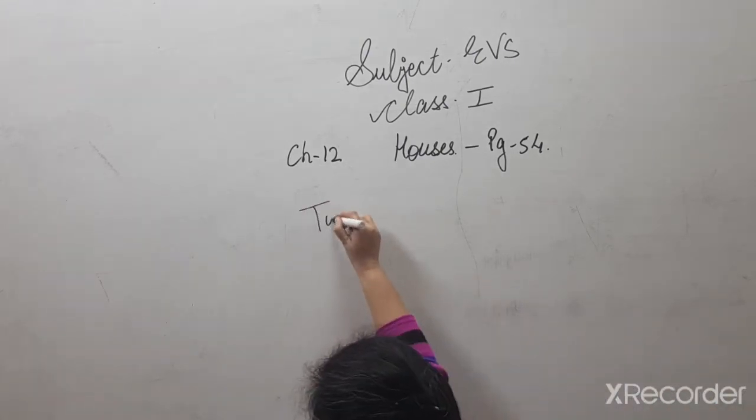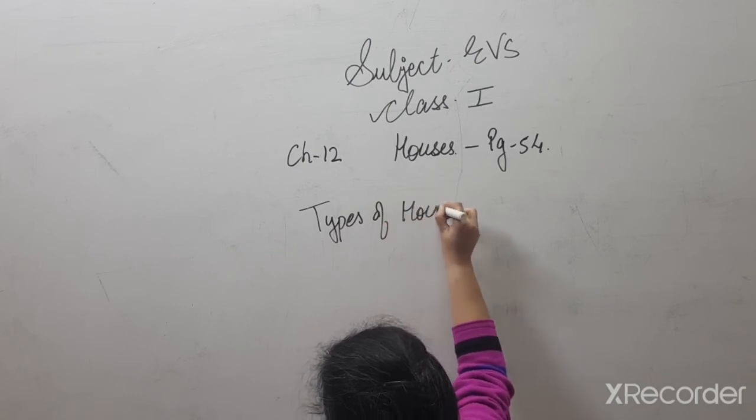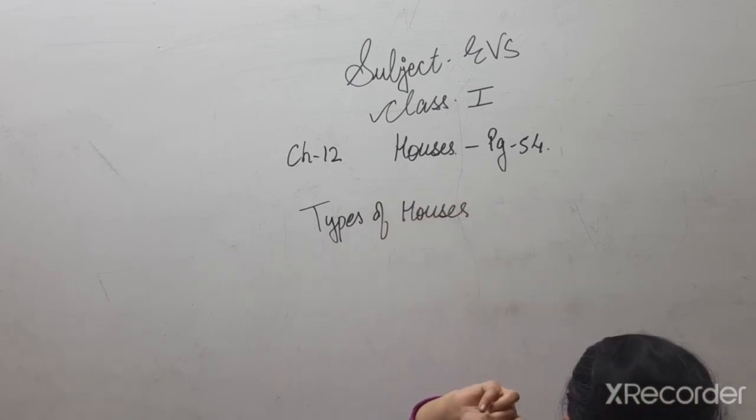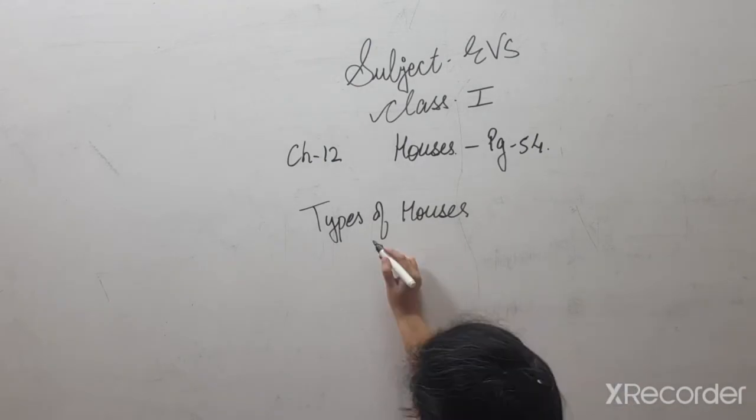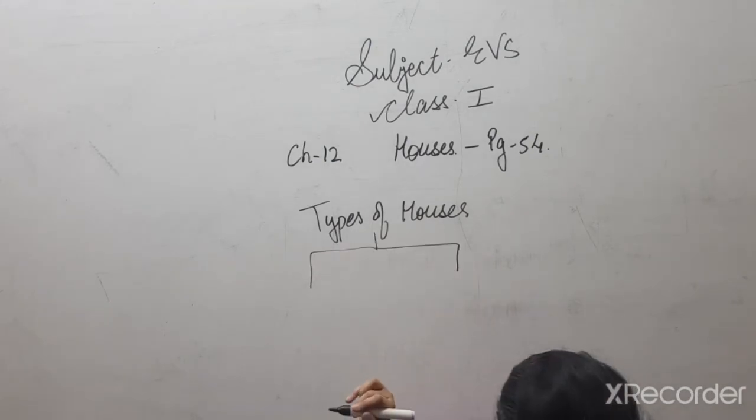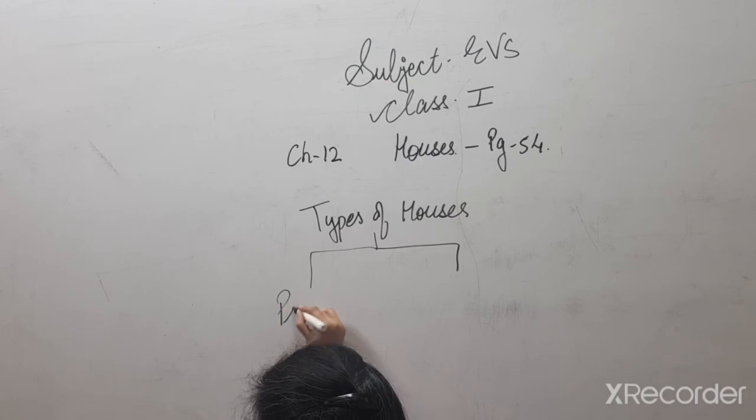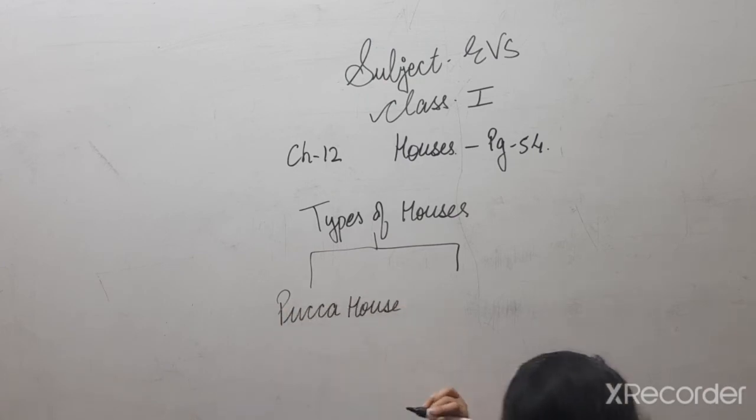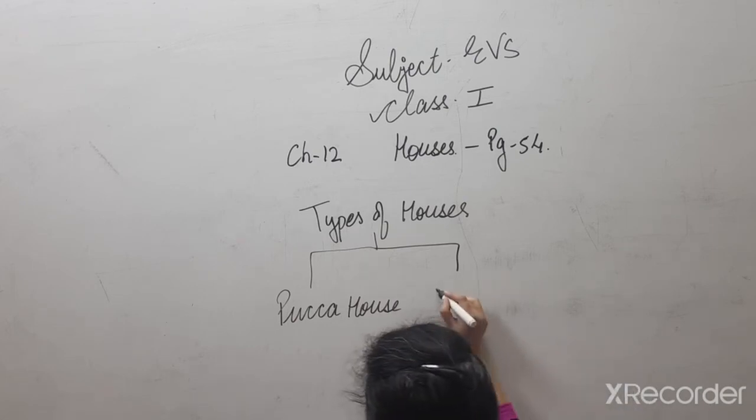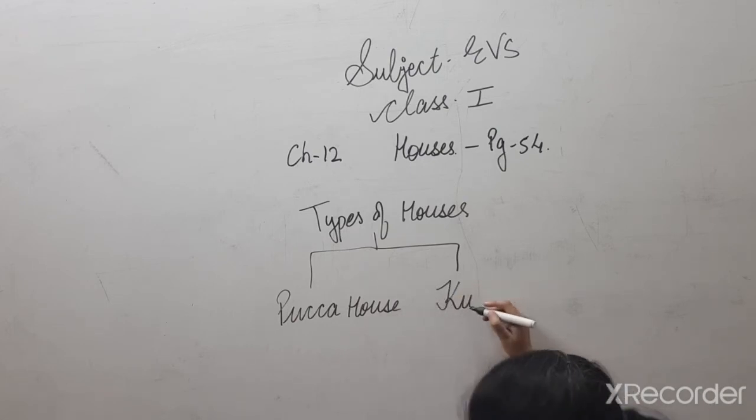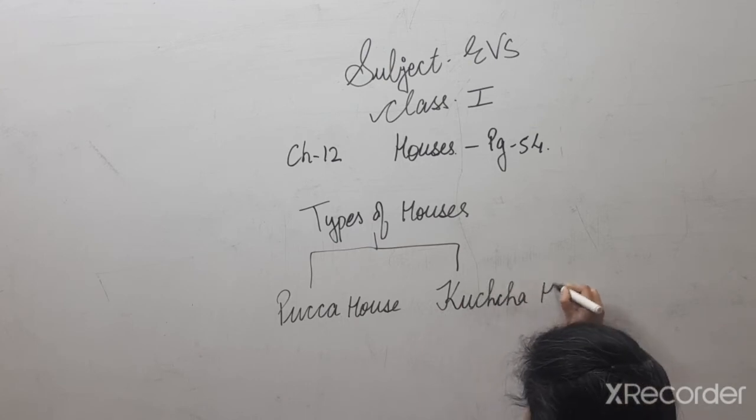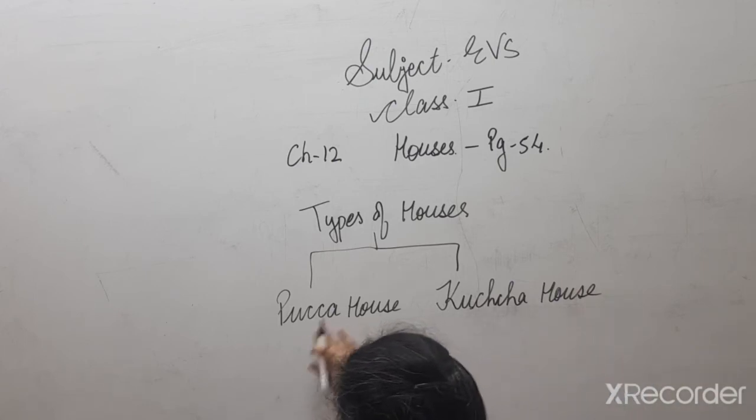Now my next topic is types of houses. Humare paas kitne tarah ke ghar hote hain? We have two types of houses. Pakka house and second type is kachha house. These are the two types of houses.